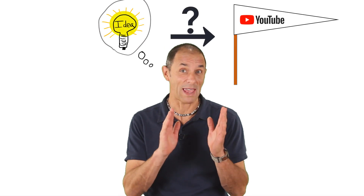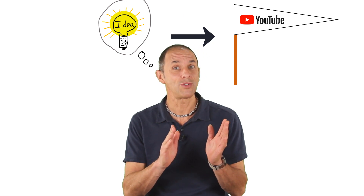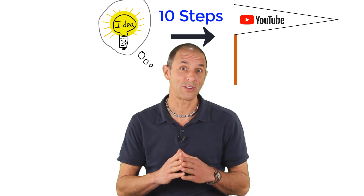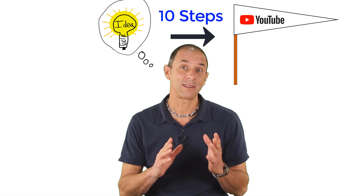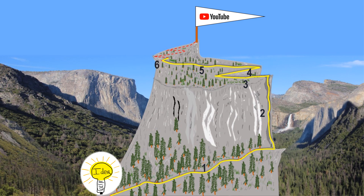So how do you take your initial brilliant ideas for science videos and actually get them made and onto YouTube? I'm going to walk you through the 10-step process that I've been using for several years, which I like to think about like climbing a mountain, where each segment in this path represents one of those 10 steps. Some segments are longer and steeper, some are easier, but they're all necessary to get my videos all the way to YouTube.